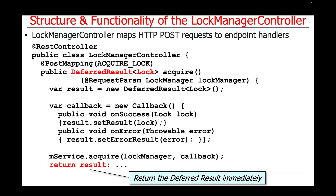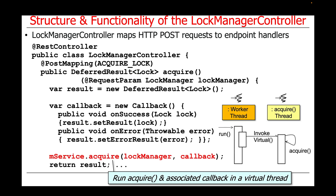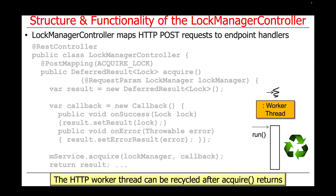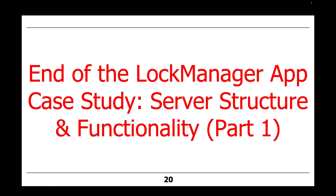In the background, this virtual thread created when we called the acquire method on the service will run the request and then deliver the results through the callback we initialized and passed in to acquire. This is what is known as the DeferredResult mechanism or the async mechanism built into Spring and Spring Web MVC. That's the end of part one of this discussion of server structure and functionality, which focused on the controller. We'll take a longer view through the service, where there are many more interesting things going on.